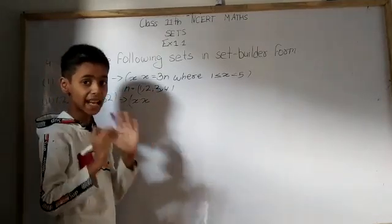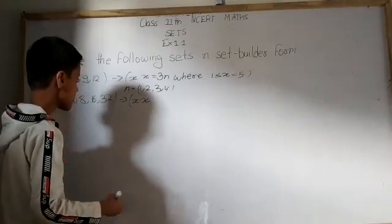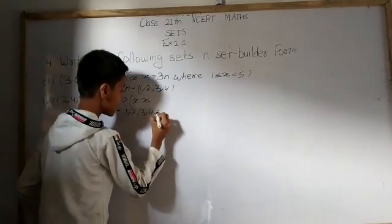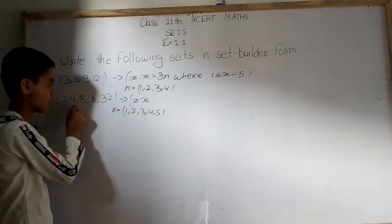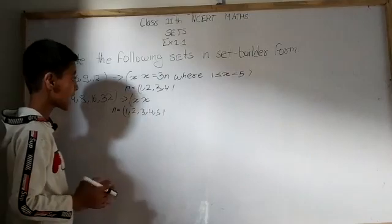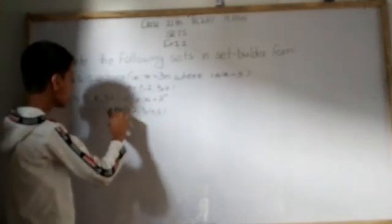So let n be any positive integer, and if n is the power of 2, we get the following set. The values of n are 1, 2, 3, 4, and 5. Putting the power: 2¹ = 2, 2² = 4, 2³ = 8, 2⁴ = 16, and 2⁵ = 32. Unlike the previous set where we multiplied by 3, here we use powers of 2 to get the elements.